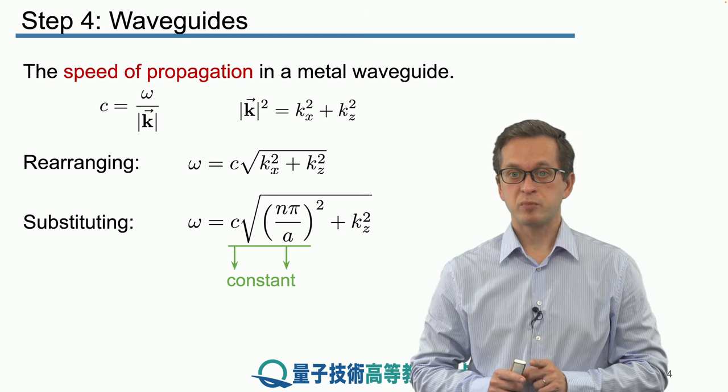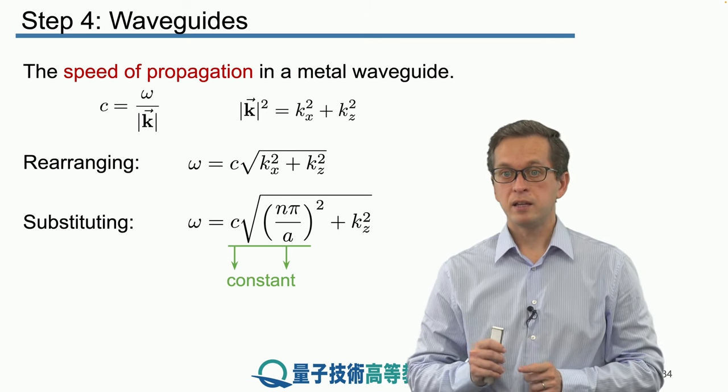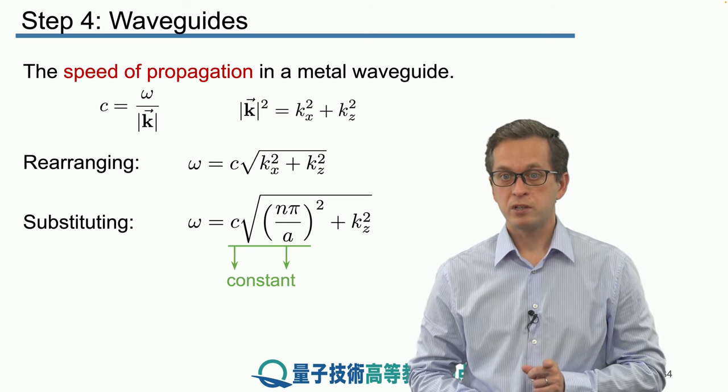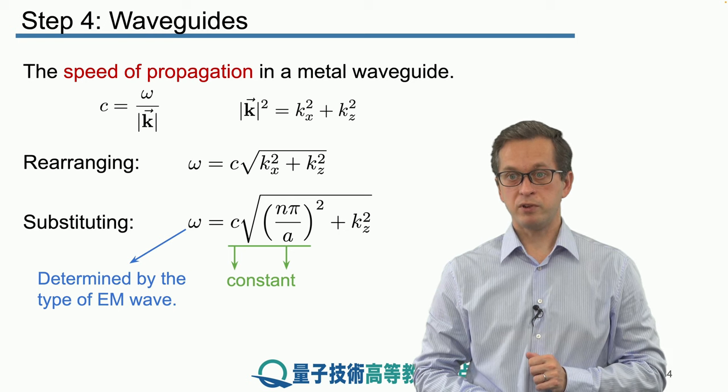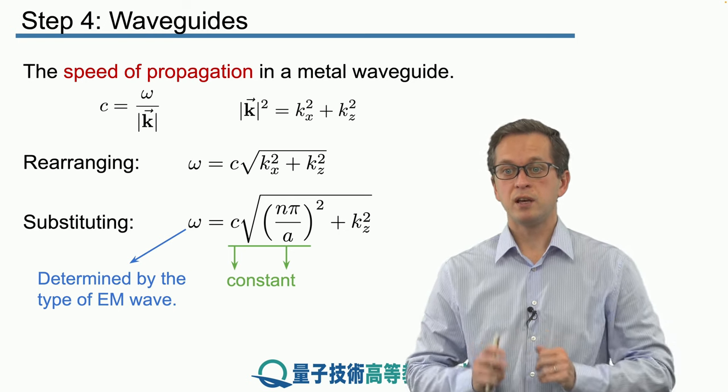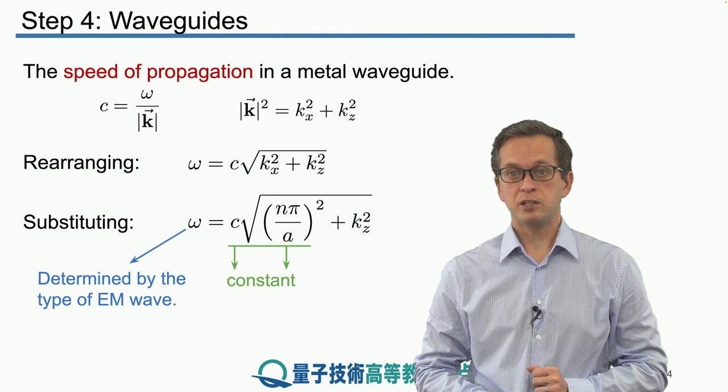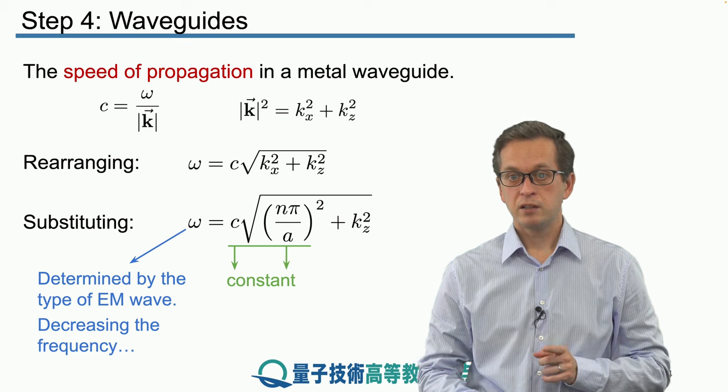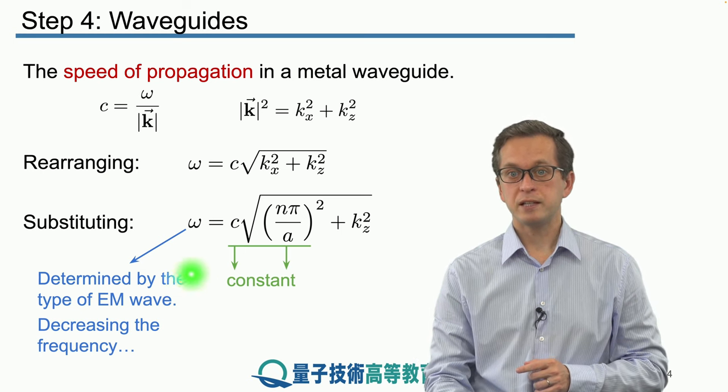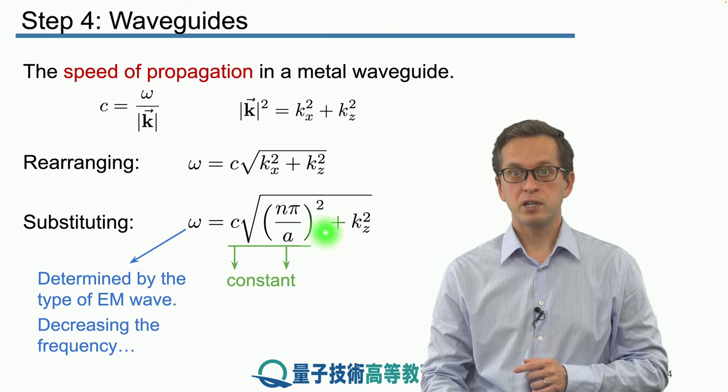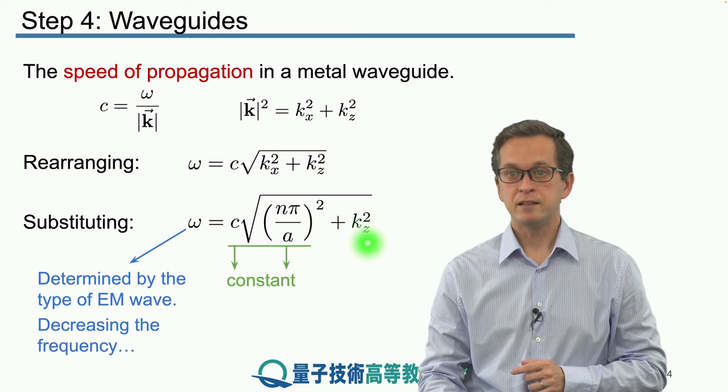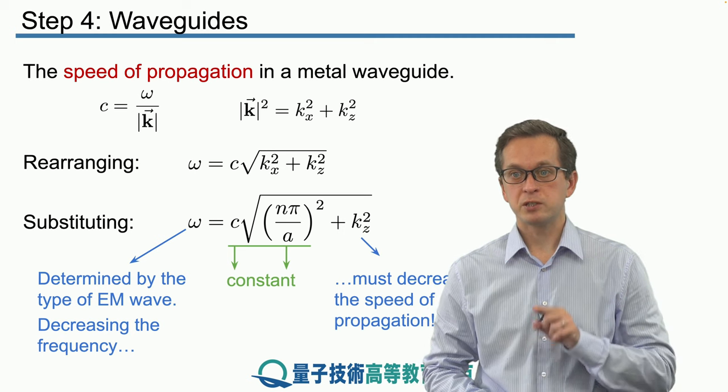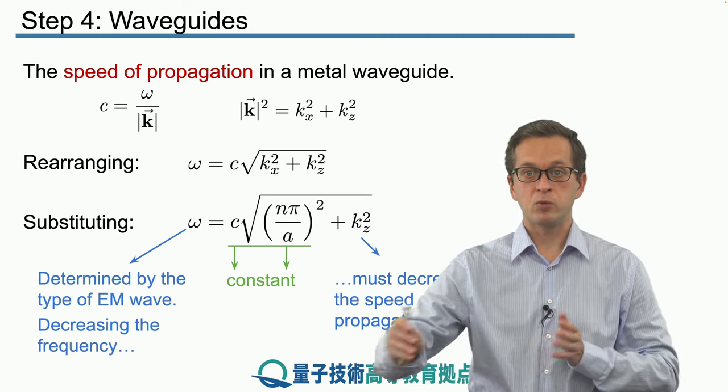So, the only things that can change in our expression is the angular frequency omega and the kz component of the k vector. Now, let's see what happens if we decrease the angular frequency. In other words, we try to feed in a different electromagnetic radiation of larger wavelengths. So, if this keeps decreasing, then in order for this expression to be satisfied, the only thing that can compensate for a decrease in omega is a decrease in kz.